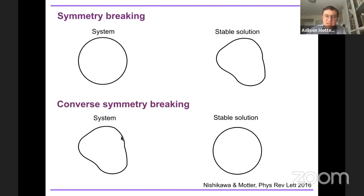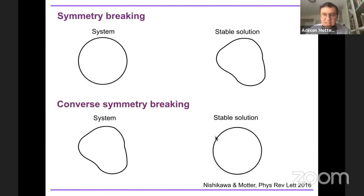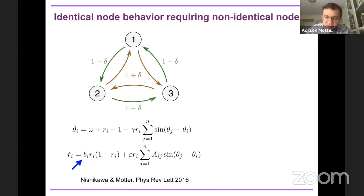This is the situation we are indirectly finding in the door-closing example. In that case, breaking the symmetry was required — not to stabilize, but to improve stability. It is natural to frame that problem this way. Once you have a system exhibiting that property, it is easy to modify it by adding an extra term that destabilizes the symmetric configuration, so that breaking the symmetry is required to stabilize. We are effectively finding an example of converse symmetry breaking in that example. This was first noted in a paper I published with Takashi Nishikawa in 2016.